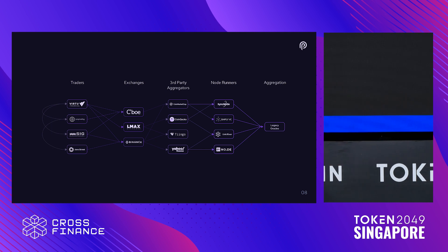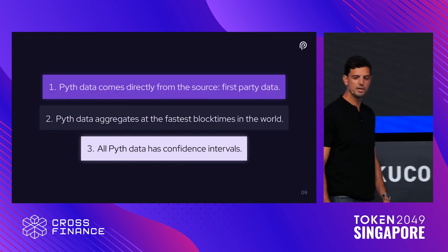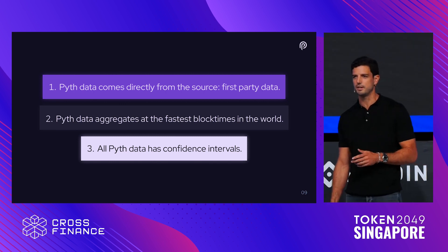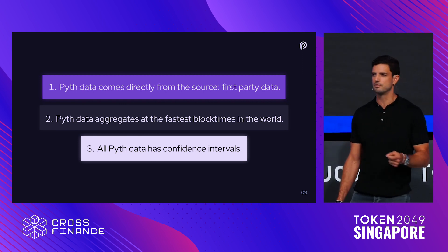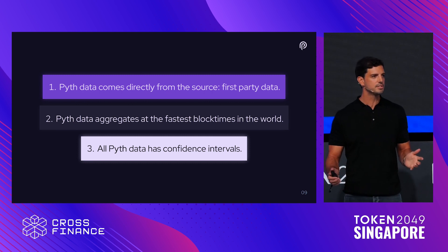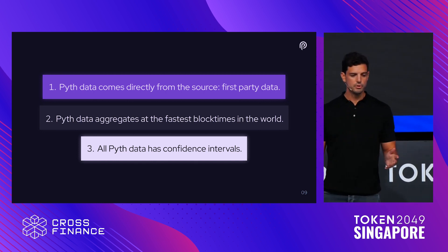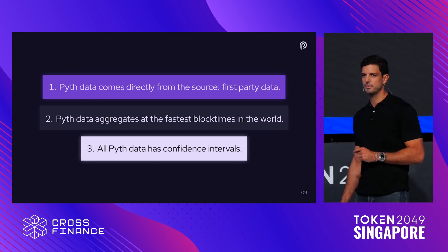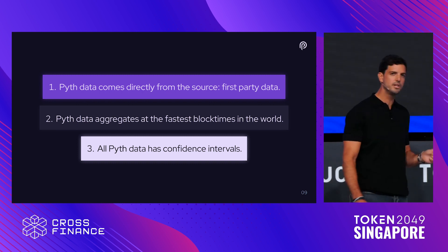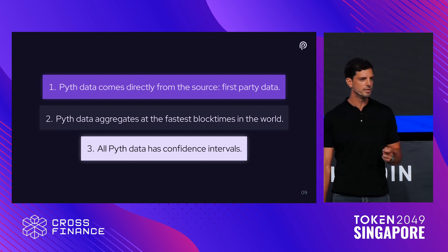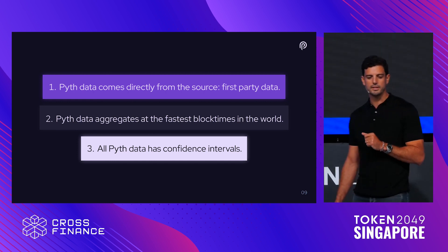Pyth solved for trust without compromising on latency through three breakthrough innovations. Number one, Pyth data comes directly from the source — what we refer to as first-party data. Inside the Pyth network, there are 90 institutions who submit their own proprietary data, consisting of trading firms and exchanges. Having such a wide, robust group of independent publishers makes the price stronger, more accurate, and robust. Number two, Pyth data aggregates at the fastest block times in the world. Pyth runs on a Solana virtual machine app chain called PythNet and aggregates at 400 milliseconds, with 350 symbols distributed to over 30 blockchains.